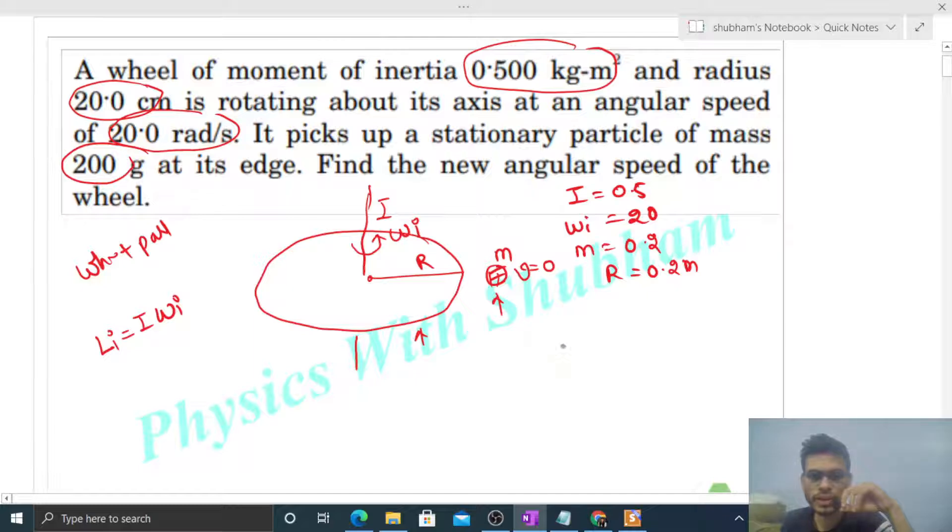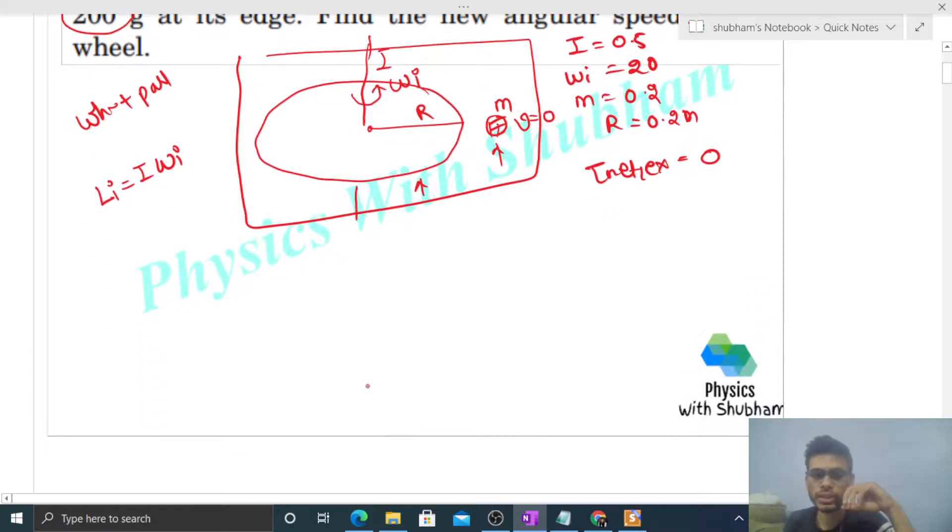Because this particle and the wheel is part of the system, that is kind of internal torque. Equal and opposite torque will act, just like when we studied linear momentum, internal forces acted. Same thing here, internal torque will act. But net external torque on the system is zero. It means angular momentum will not change for the system.